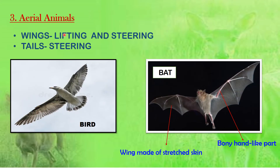Aerial animals are animals that fly using wings. Birds have wings covered with feathers, which are used for lifting and steering, and their tails also help them to steer. Bats are mammals that can fly, but their wings are not made of feathers — instead, they are a stretched skin covering over a bony, hand-like part of the body.